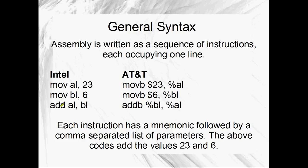So this is what assembly looks like. You've got a mnemonic on a line, and that's followed by a comma-separated list of parameters. You can probably see that Intel syntax and AT&T syntax are pretty similar, but there are some differences which we're going to go through. This is the Intel and AT&T versions of exactly the same thing - they're just going to add the value 23 in 6.